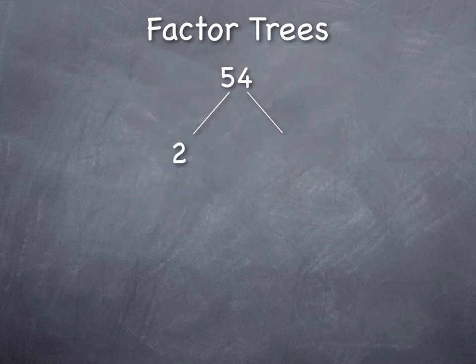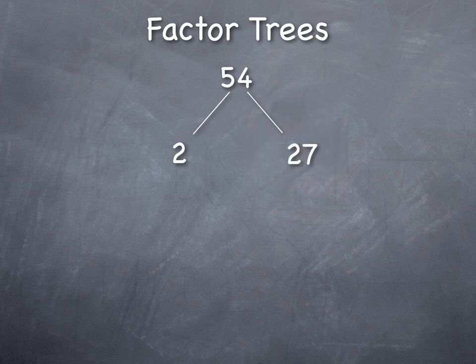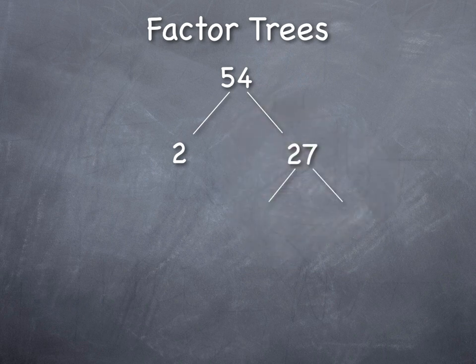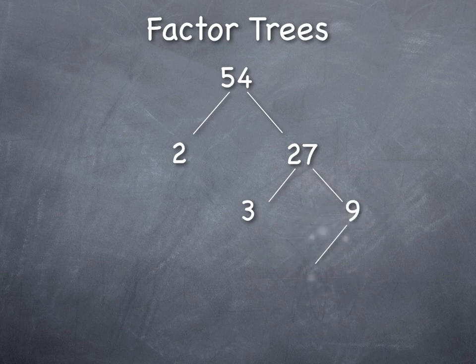You could try to start with a prime number, 2 times, in this case, 27. You don't have to, but you could. 2 times 27, 2 won't break down any further, but 27 will break down into 3 times 9, and 9 will break down into 3 times 3.